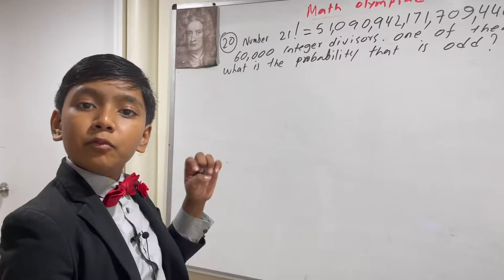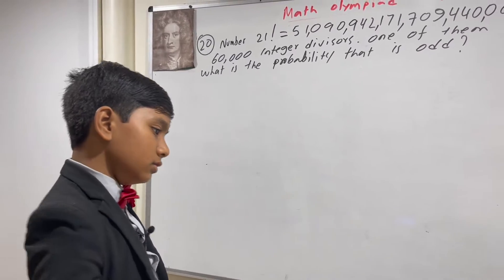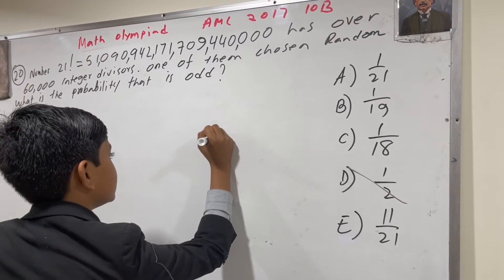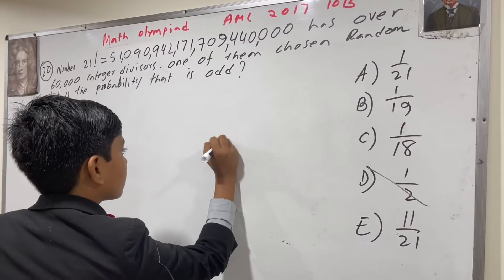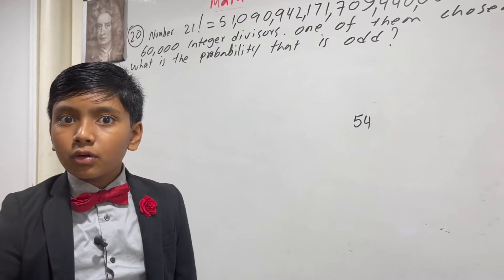For example, what about the number 16 or the number 54? That might have a lot of divisors. Let's go with 54 as an example.